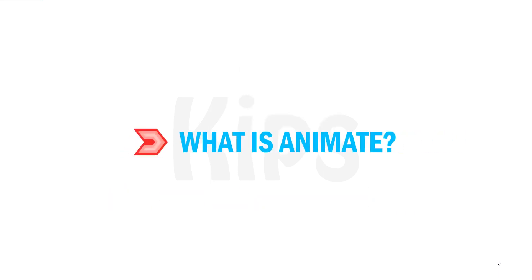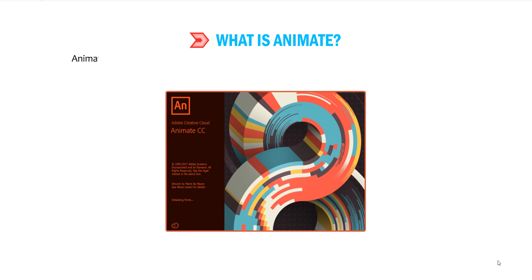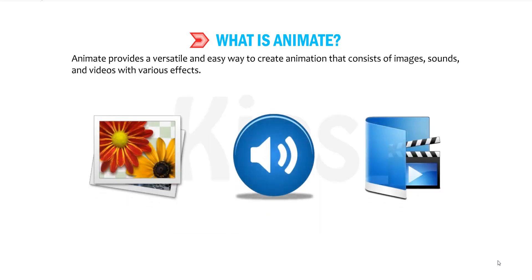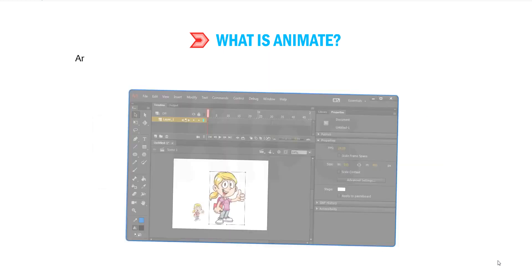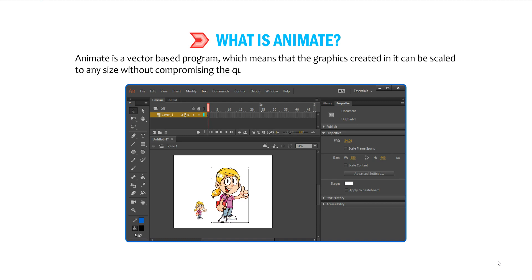What is Animate? Animate is a powerful animation software package developed by Adobe Systems, formerly Macromedia. Animate provides a versatile and easy way to create animation that consists of images, sounds and videos with various effects. Animate is a vector-based program, which means that the graphics created in it can be scaled to any size without compromising the quality.